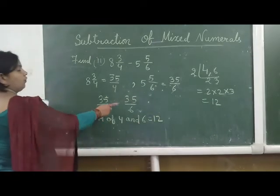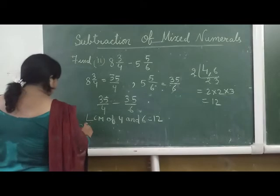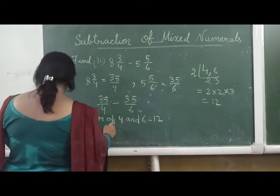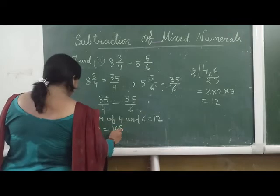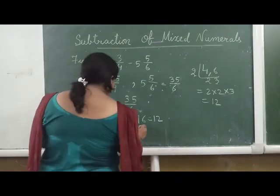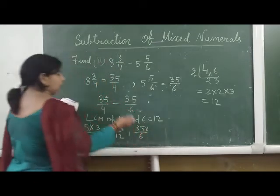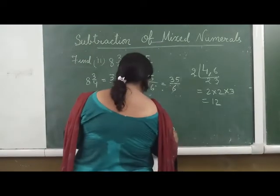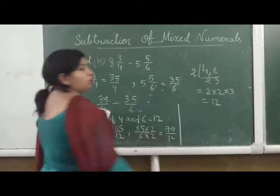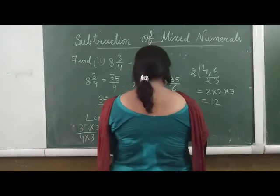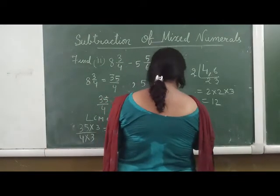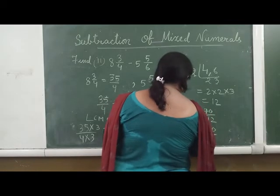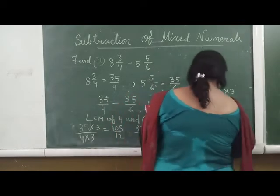Now we have to change these fractions into equivalent fractions. For 35 by 4, we multiply by 3 to get 105 by 12. For 35 by 6, we multiply by 2 to get 70 by 12. Now we subtract: 105 by 12 minus 70 by 12 equals 105 minus 70 by 12, which gives us 35 by 12.